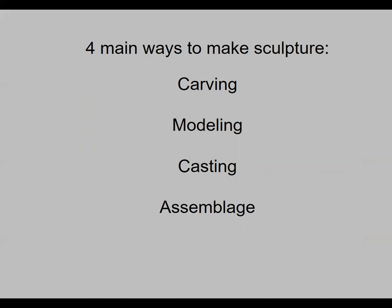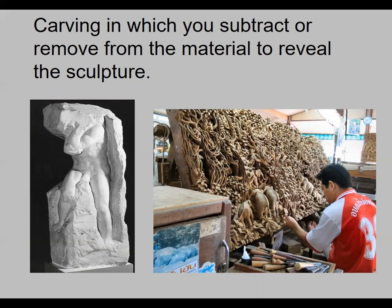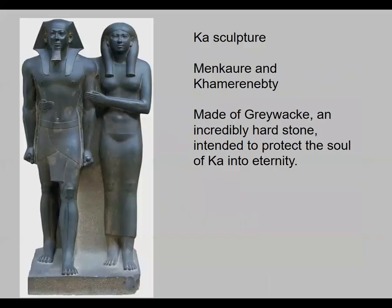There are four main ways to make sculptures: carving, modeling, casting, and assemblage. Carving is when you subtract or remove materials to reveal the sculpture. This Ka sculpture of Menkaure and Khamerernebty is made out of an incredibly hard stone called Greywacke. The reason they used this hard stone is because the sculpture was where one of the souls of the pharaoh and his wife would reside for eternity — the sculpture had to last forever so their Ka, that soul, would have a place to live.